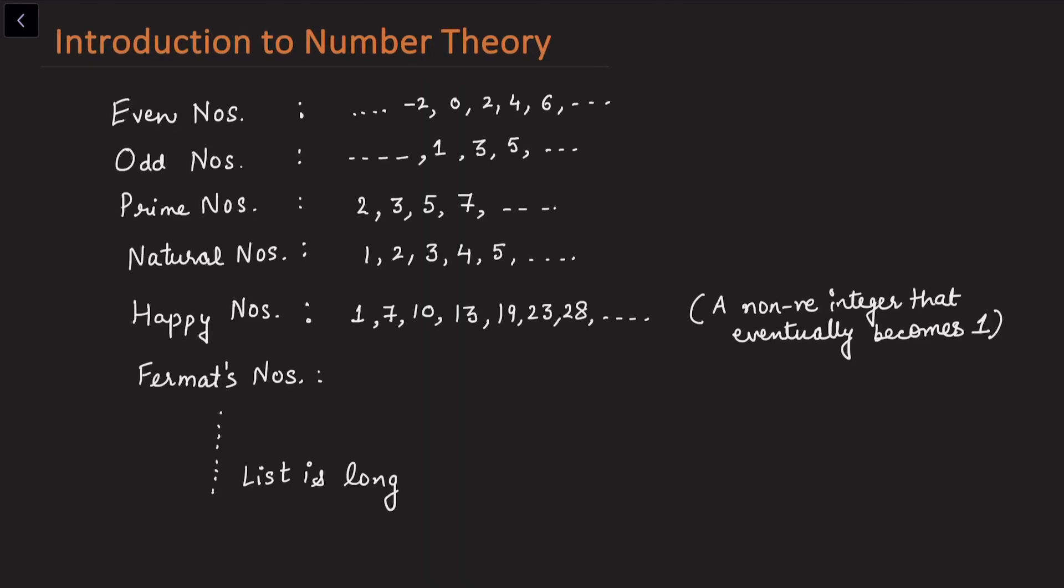We have even numbers, we have odd numbers, prime numbers, natural numbers, and we have happy numbers.